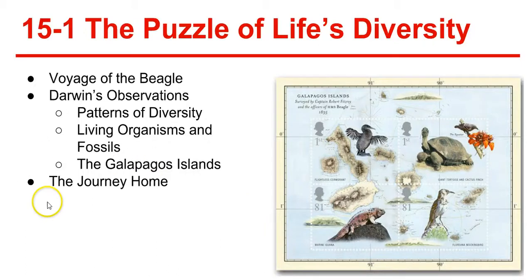On the journey home from the Galapagos Islands, Darwin observed that many characteristics of animals and plants varied noticeably among the different islands. He began to wonder if animals living on different islands had once been members of the same species — that separate species would have evolved from an original South American ancestor species after becoming isolated on different islands.